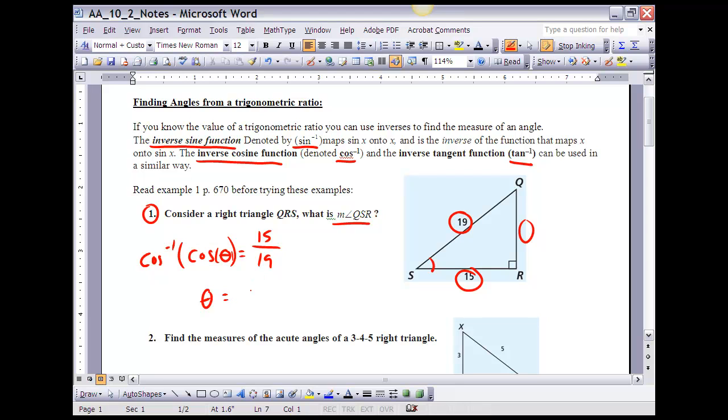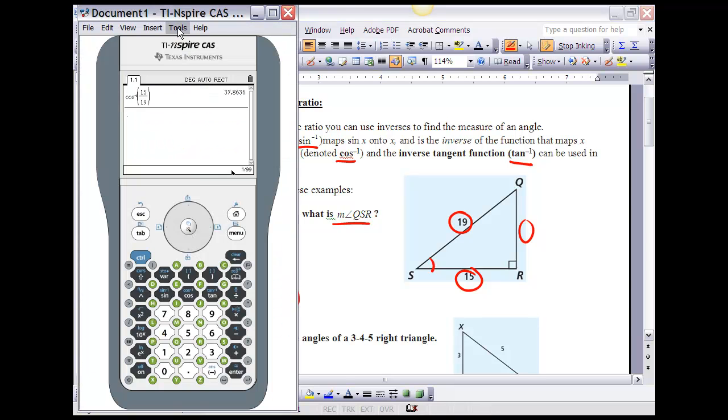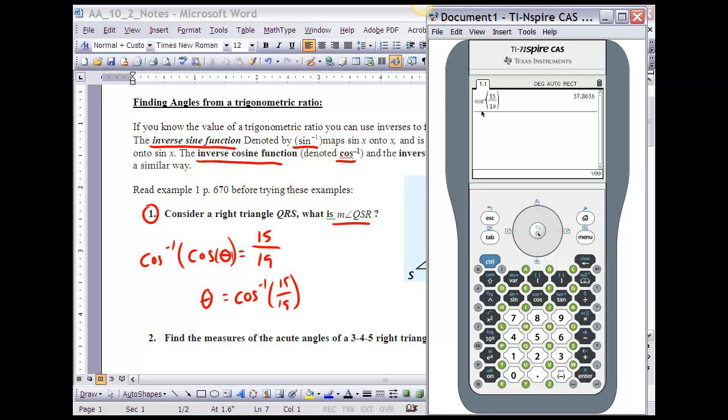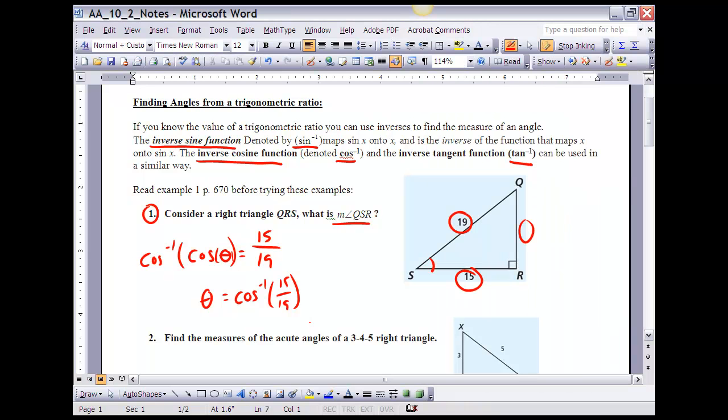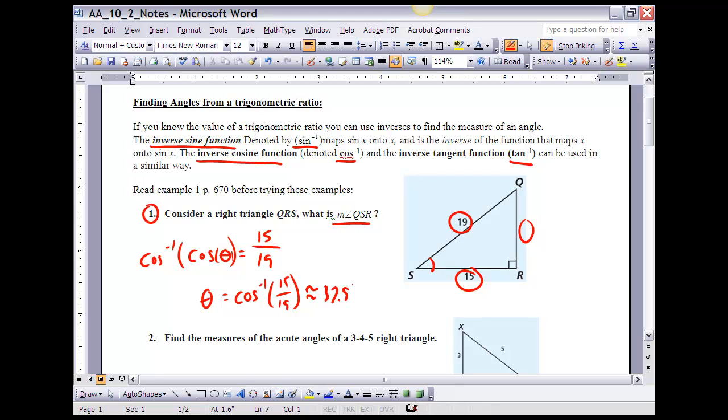If I take the inverse cosine of the cosine of theta, that's equal to theta. Therefore, I have to do it on the other side as well. So, theta is equal to the inverse cosine of 15 over 19. Then I'm going to go to my calculator, and we have a way of doing that on our calculator as well. You'll notice that, to get inverse cosine, I'm going to hit control cosine, so that's how I got the inverse cosine up there, of 15 over 19, and remember hit control enter. If you do that, you get 37.86, or about 37.9 degrees.